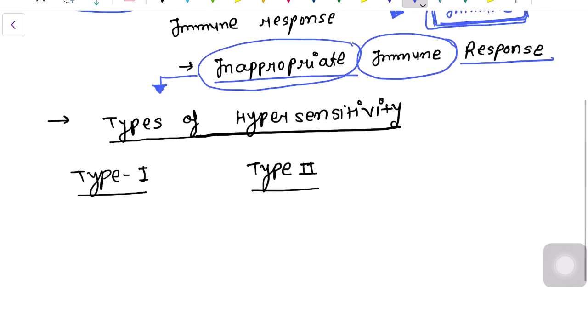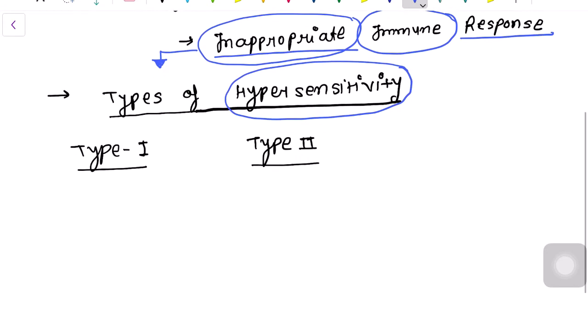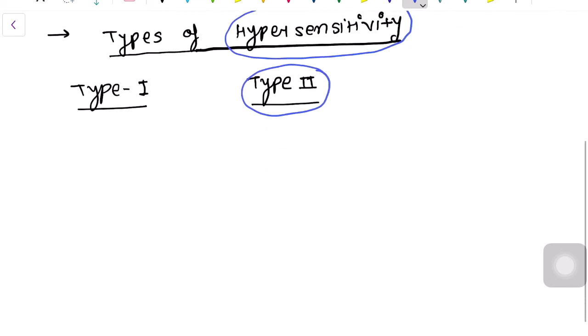For understanding hypersensitivity reactions, scientists and doctors have divided them into four types. A fifth new type exists, which is a modified type 2 reaction. Here we are going to discuss type 1 hypersensitivity reaction.